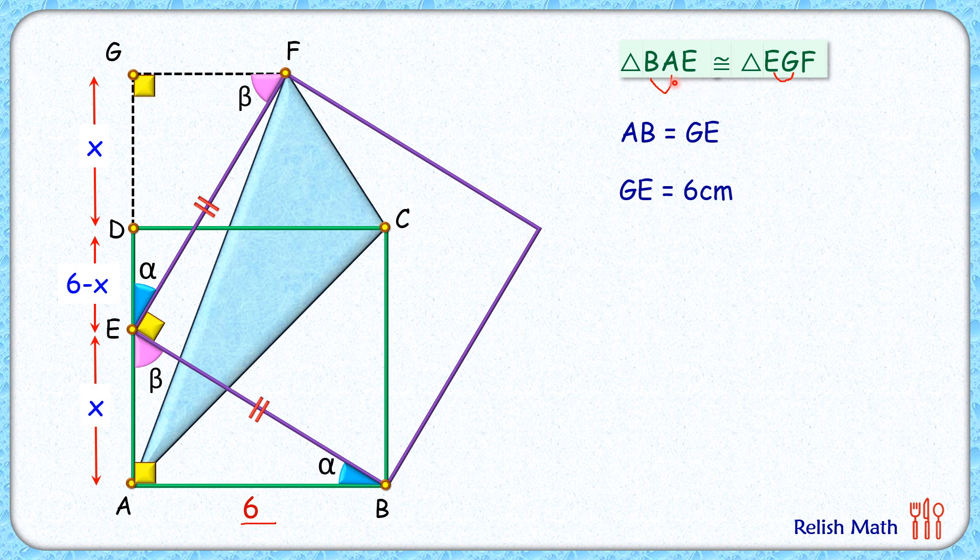Also, as the triangles are congruent, we can say here that GF length will be the same as AE length. But AE length, we have assumed as x centimeters, so GF will be the same as x centimeters.